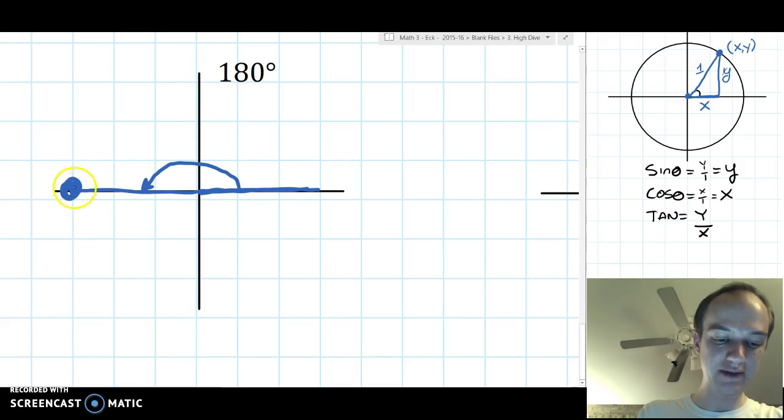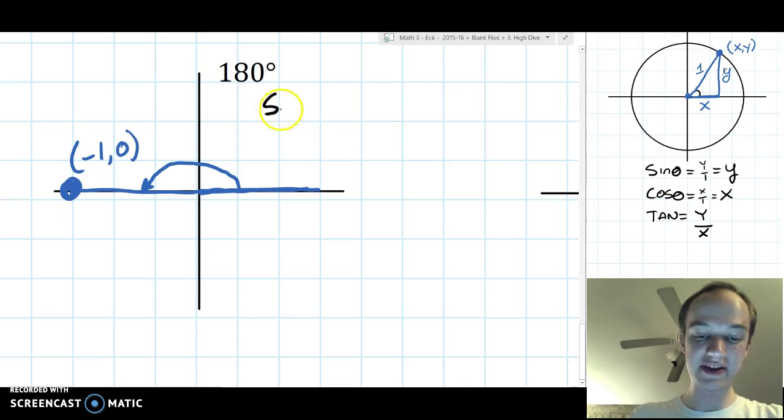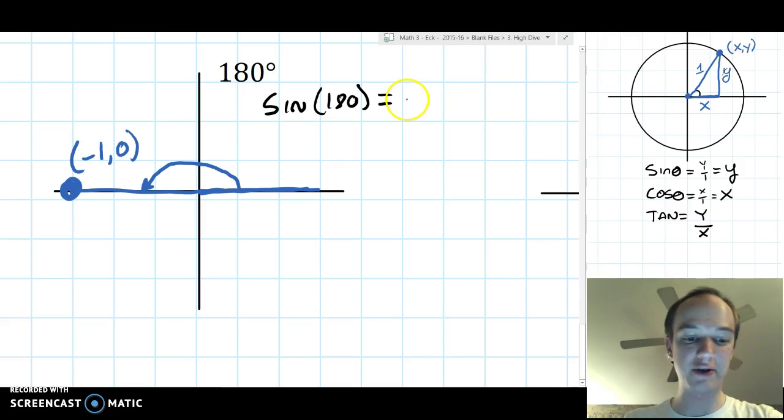Again, we'll just pick a point on the end, and the most basic point to pick is going to be negative 1 comma 0. So, sine of 180 has to be the same as y coordinate. There's no height in this triangle. It's an impossible triangle. Sine of 180 is 0.